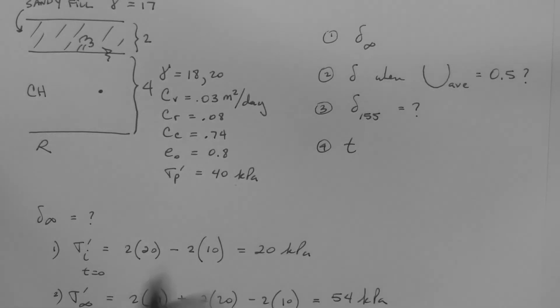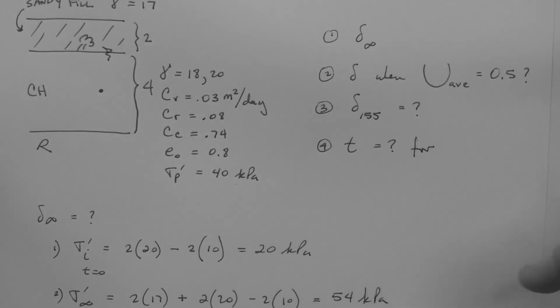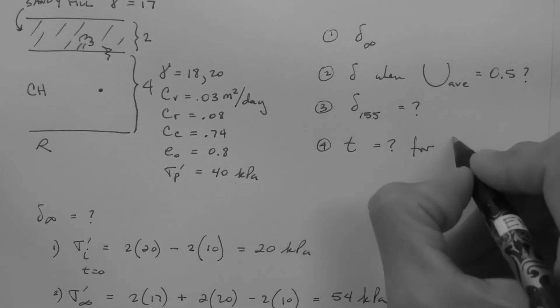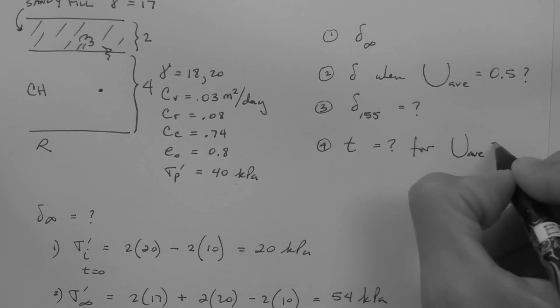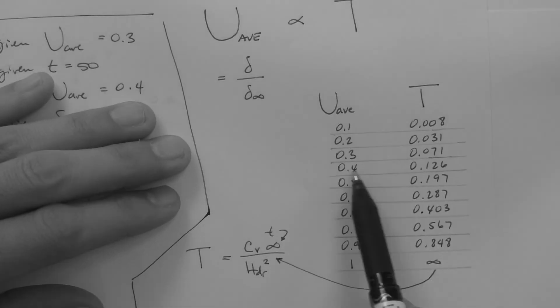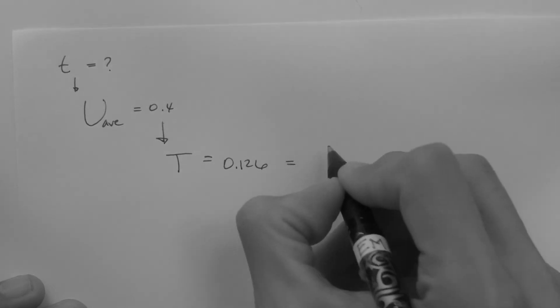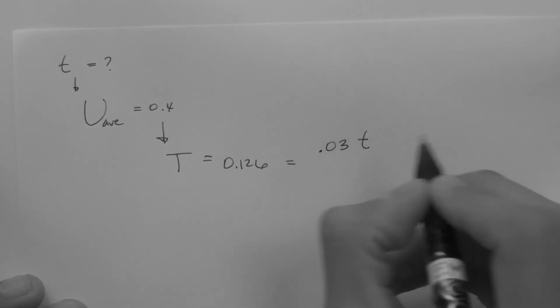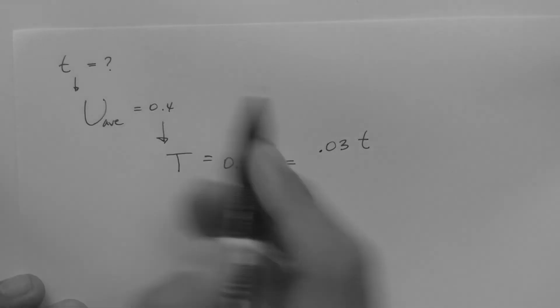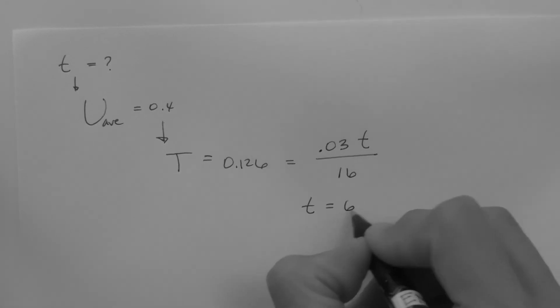Number 4. How long does it take for the layer to consolidate 40%? The time factor for an average degree of consolidation of 0.4 is 0.126. And the time factor is equal to the coefficient of consolidation times the time, which is what we are looking for, divided by HDR squared. 67 days.